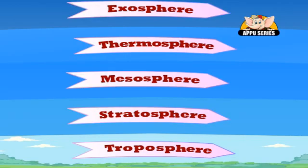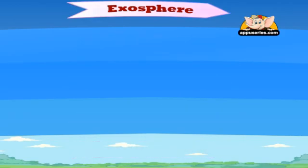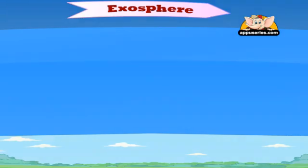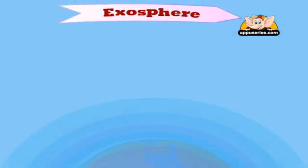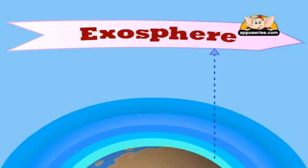The exosphere starts 500 km above the earth and is the highest layer. It starts at the top of the thermosphere and continues until it merges with the interplanetary gases or space.